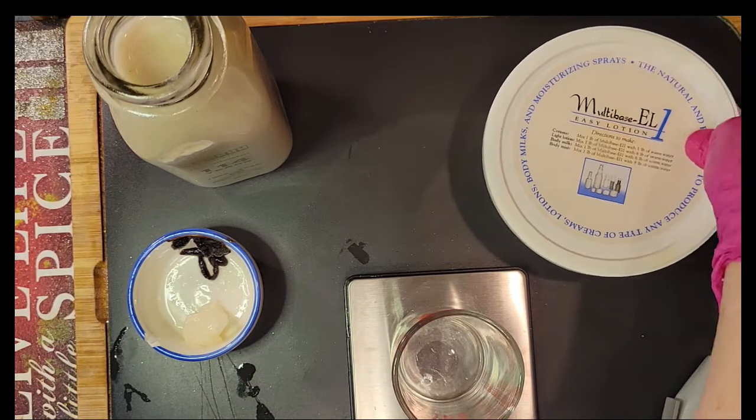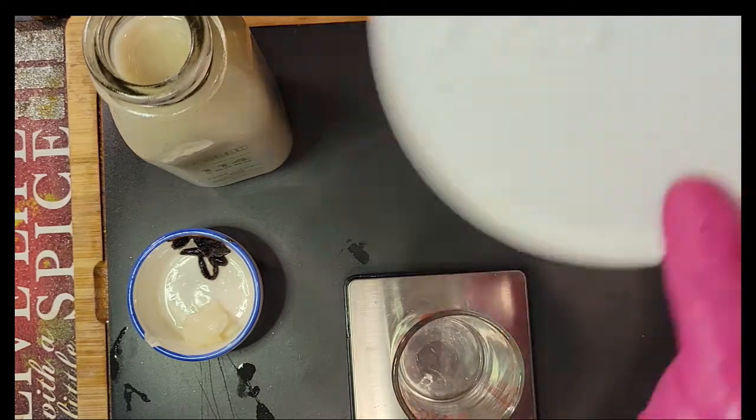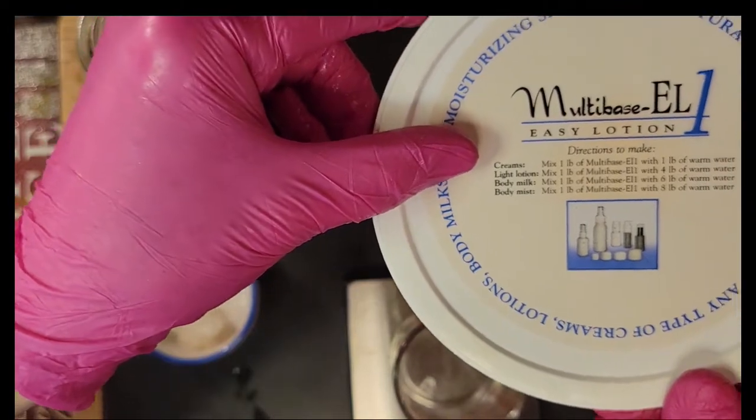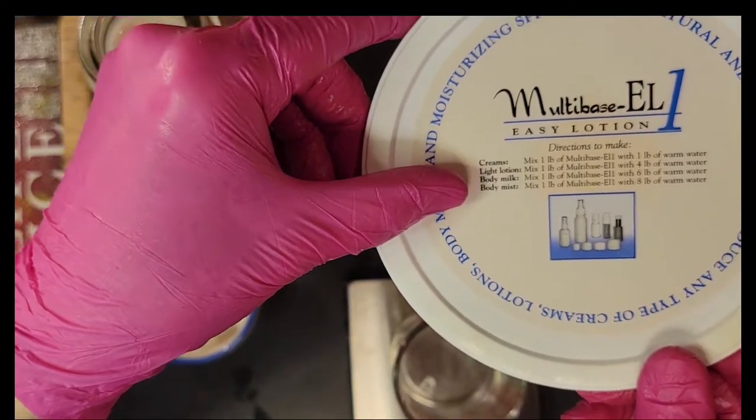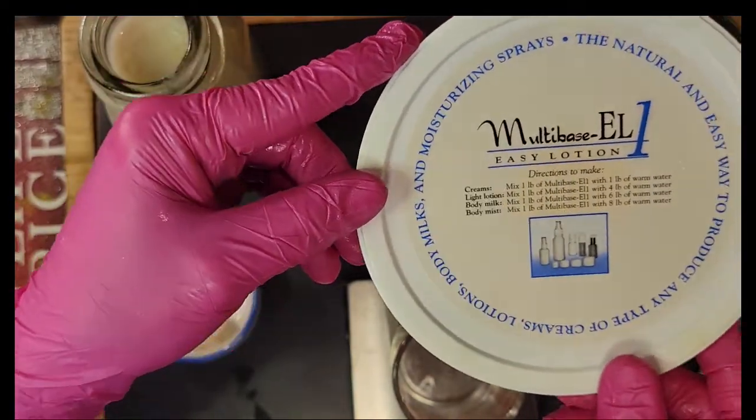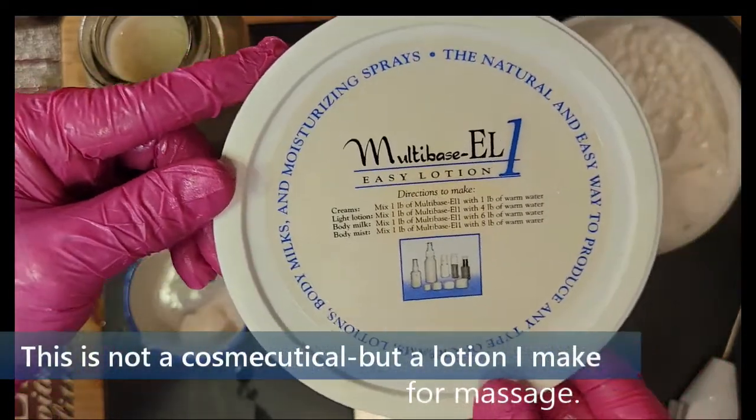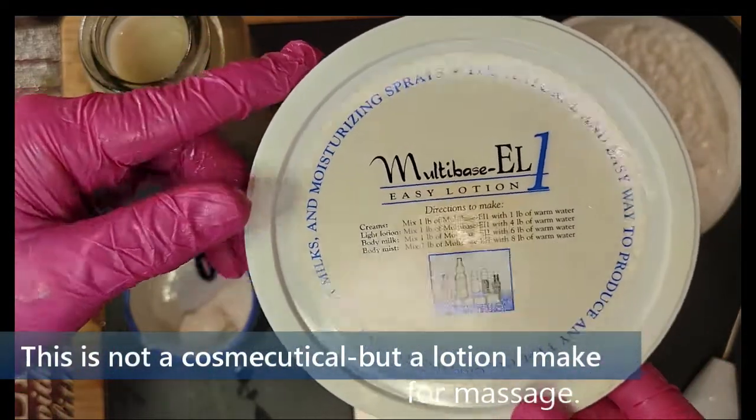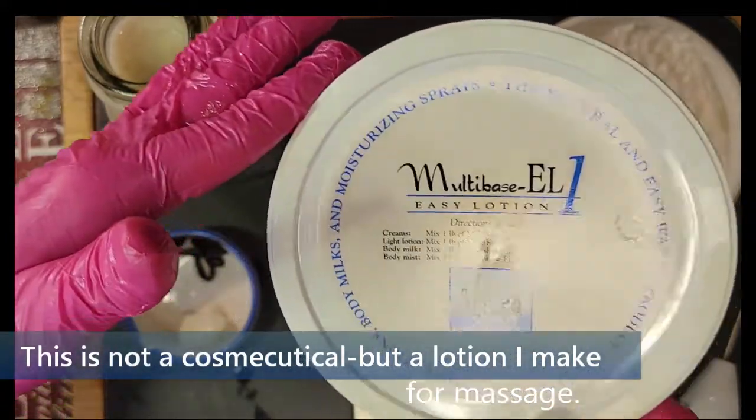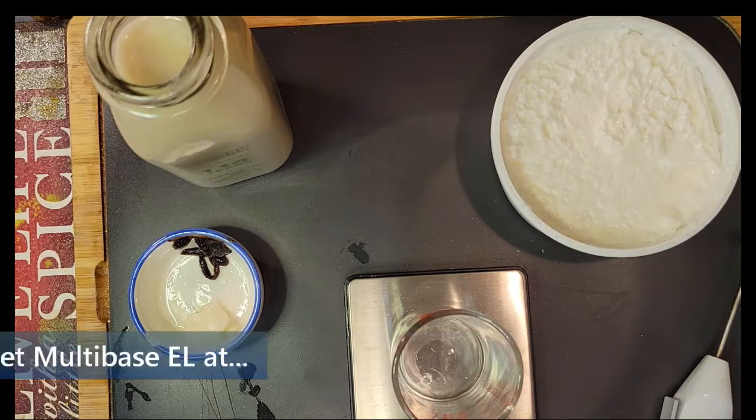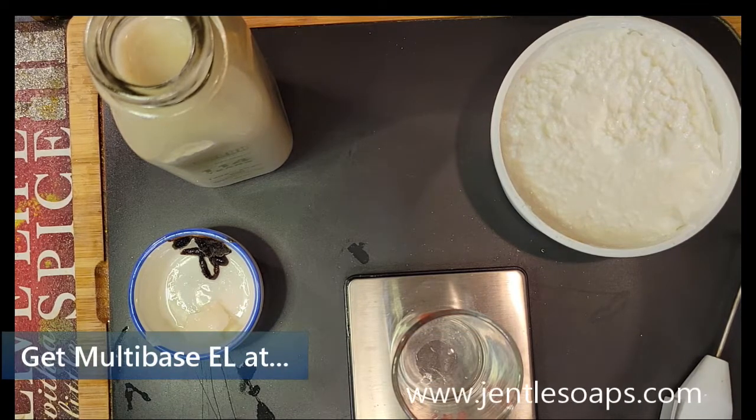So the first thing we're going to do is measure out our multi-base. Now, the neat thing about this multi-base is you can make cream, light lotion, body milk, and body mist. Now, I'm not going to use combo butter on my face because I find it a little too strong for my face, but it's perfect for my body for rubbing away all those aches and pains. In the cream, we'll also be adding a few warming essential oils to help with muscle ache.